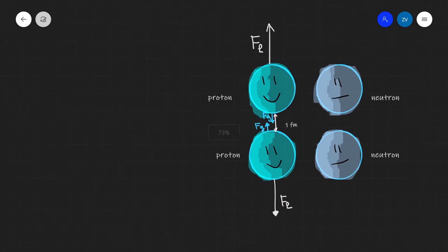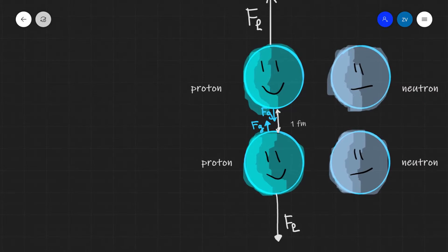So, focusing in on the nucleus, we're going to see that the two protons are going to repel with an electrostatic force, which we'll call Fe. Well, how big will this force be? We can use Coulomb's electrostatic formula to calculate this.